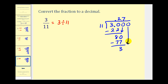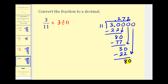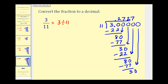We add another zero and bring it down, and we have thirty again. How many elevens in thirty? We asked that earlier — that was two. Two times eleven is twenty-two. We subtract, giving us eight. Add another zero and bring it down. How many elevens in eighty? We just asked that as well — that was seven. Seven times eleven is seventy-seven. We subtract and the difference is three. Notice we keep getting the same numbers — that's an indication our digits are repeating. Our quotient shows 0.2727..., so this decimal is going to be 0.27 repeating. Three-elevenths is equivalent to 0.27 with a bar over the two and the seven to show the two-seven repeats.